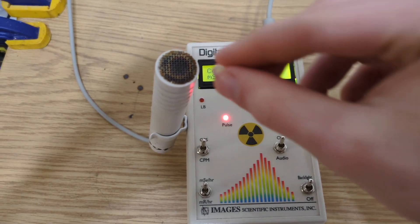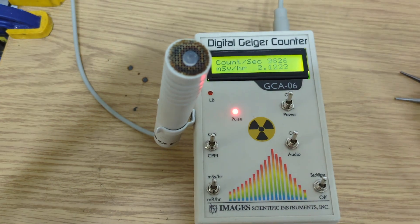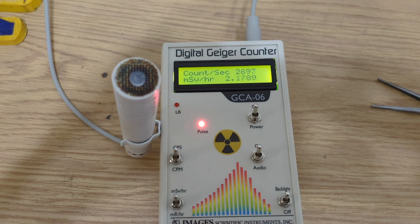Now that we have our positron source, we can use a Geiger counter to show that it's producing radiation, but how do we know what kind of particles are being radiated?